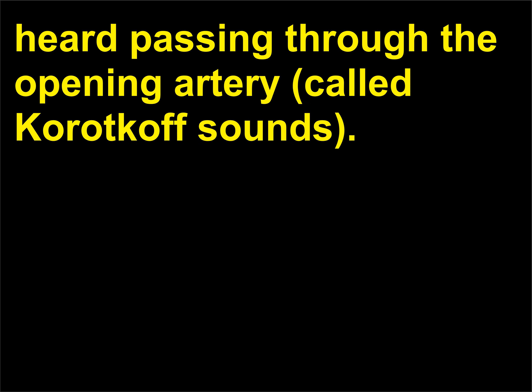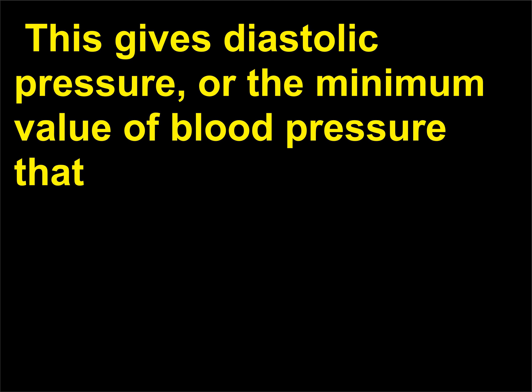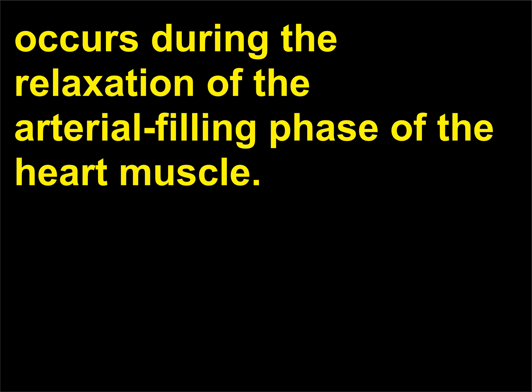Air is then released from the cuff until the blood is first heard passing through the opening artery, called Korotkoff sounds. This gives diastolic pressure, or the minimum value of blood pressure that occurs during the relaxation of the arterial filling phase of the heart muscle.